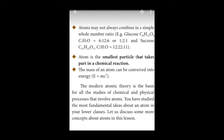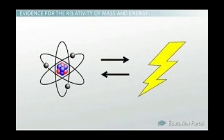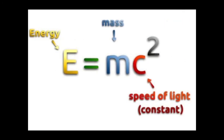Postulate number 7: the mass of an atom can be converted into energy. When an atom is broken down, some of its mass is converted into a large amount of energy. In Einstein's equation, E = MC², where E is energy, M is mass and C is the speed of light. If we reverse Einstein's equation, we get M = E/C². Hence, a small amount of mass can be converted into an enormous amount of energy.